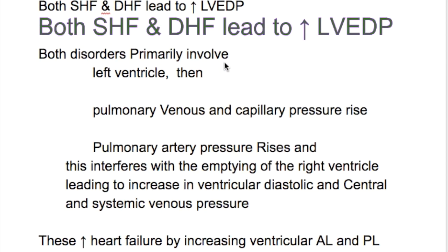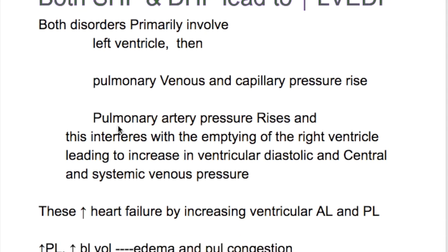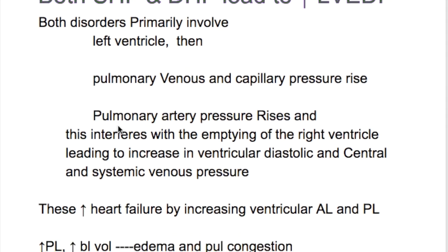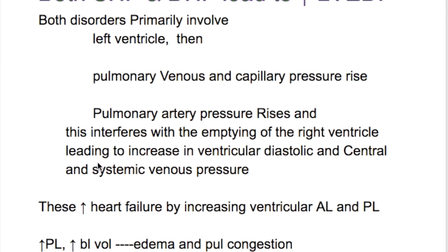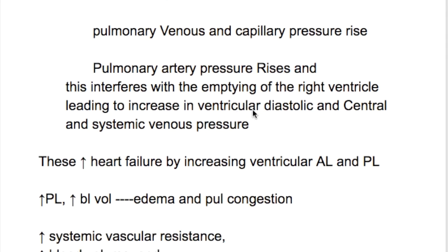Both disorders primarily involve the left ventricle. Then pulmonary venous and capillary pressure rise, followed by a rise in pulmonary artery pressure. This interferes with the emptying of the right ventricle, leading to an increase in right ventricular diastolic and central and systemic venous pressure.